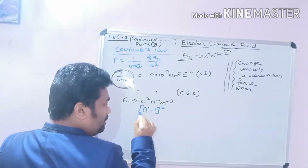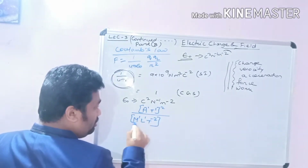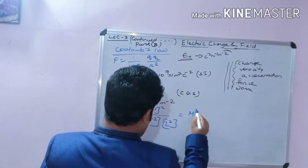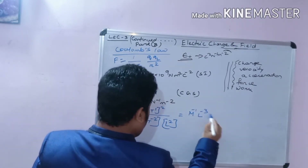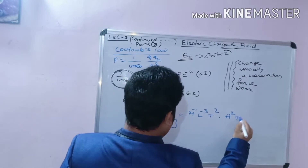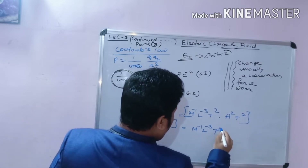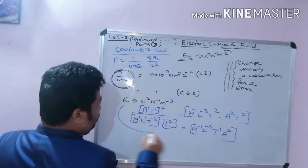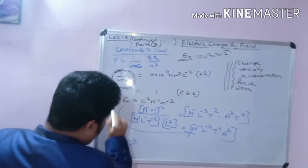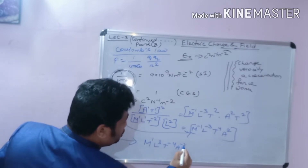Acceleration has dimensional formula M1 L1 T minus 2. Simplifying, we get M minus 1, L1, equal to L3, T minus 4. Multiplied by A squared T squared, the final answer is M minus 1, L minus 3, T to the power 4, A to the power 2. This is the dimensional formula of epsilon-0.